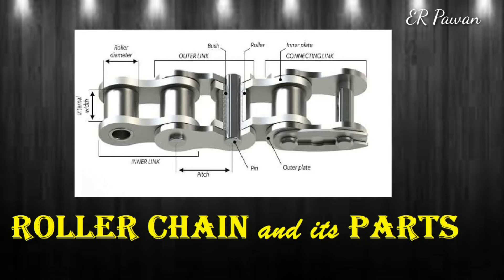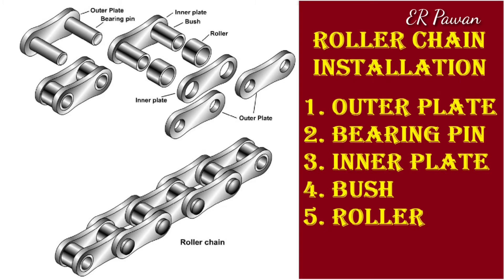Roller chain is constructed from a bush, inner link, pin, outer plate, inner plate, and roller. A bush along with the roller is fitted inside both the plates, and then a pin is passed through both ends of the roller to fasten it. The rollers are free to rotate inside the bush so that when it contacts the sprocket, wear and tear is minimized. Generally made of steel, it is soundless and less prone to wear compared to block chains, and gives much service life if proper lubrication is maintained.